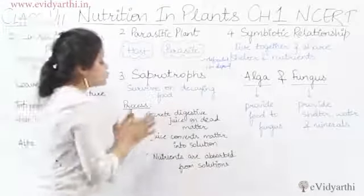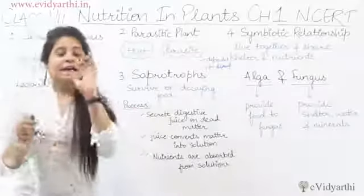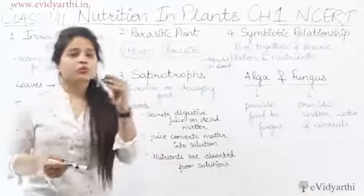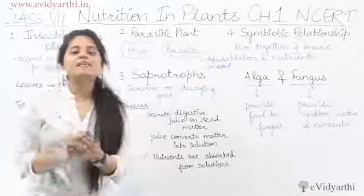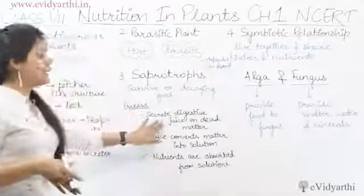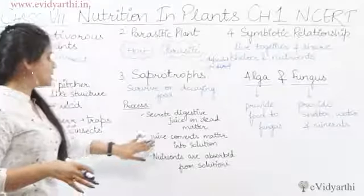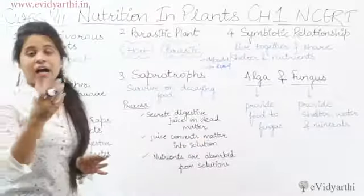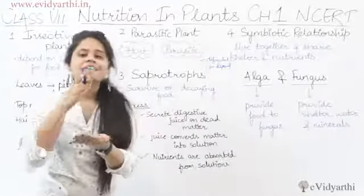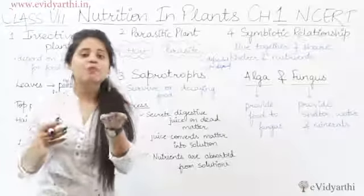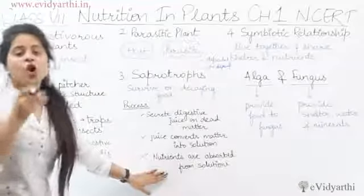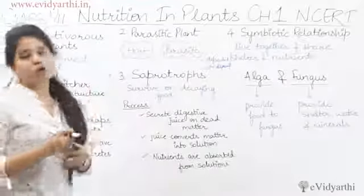Next, saprophytes secrete digestive juice on dead matter. For example, we have a piece of bread. After a while, the bread is dead matter. Digestive juice is secreted onto it. The juice converts the matter into a solution, and from that solution, the nutrients are absorbed. This is how saprophytic plants survive.